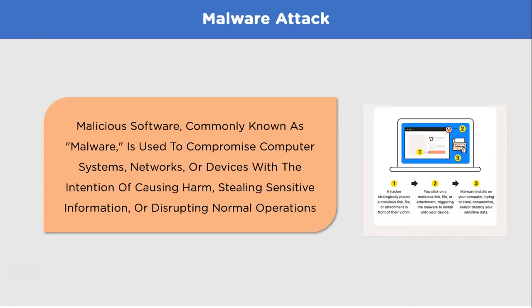First on the list, we have malware. Malware encompasses various types of malicious software designed to infiltrate systems, steal data, disrupt operations, and gain unauthorized access. It includes viruses, worms, trojans, ransomware, and spyware. Malware disguises itself as legitimate files or software to deceive users and avoid detection. It can propagate through infected email attachments, malicious websites, or compromised software.